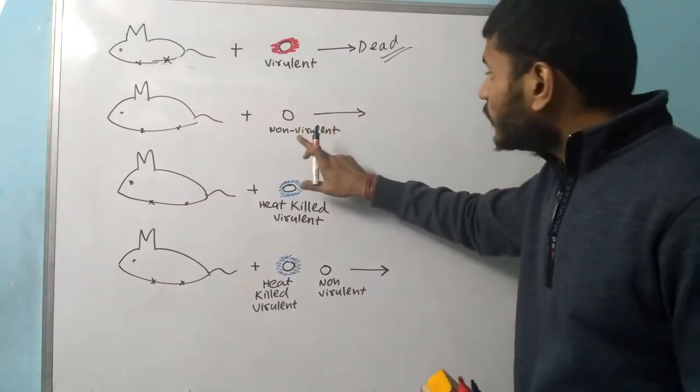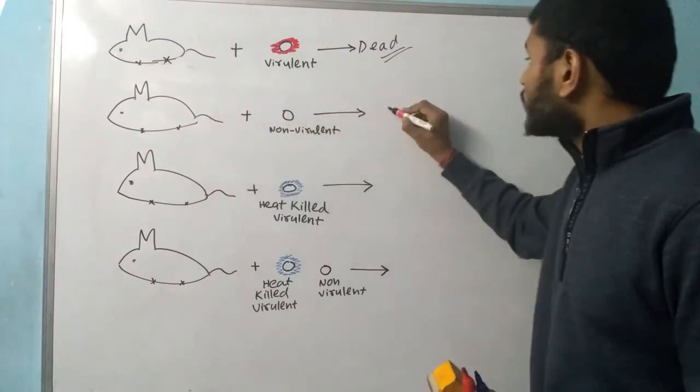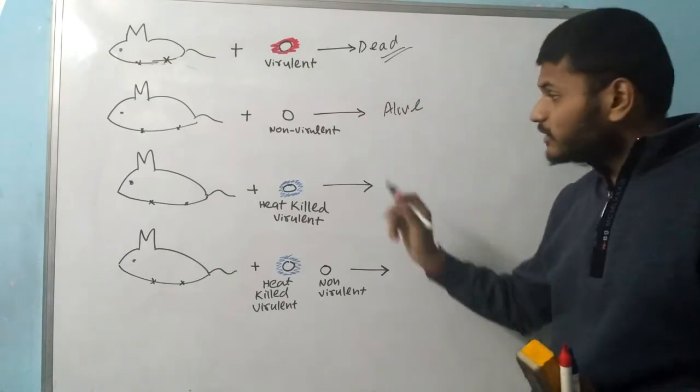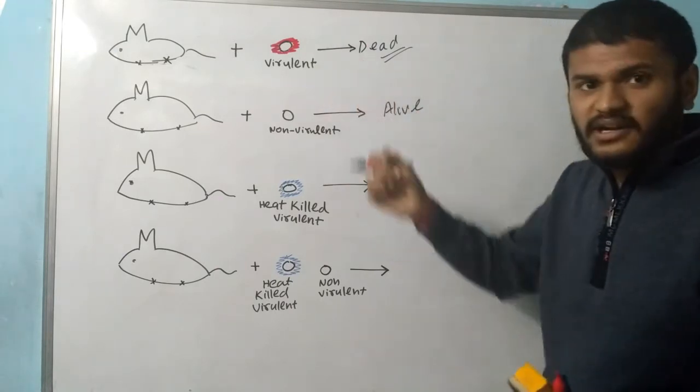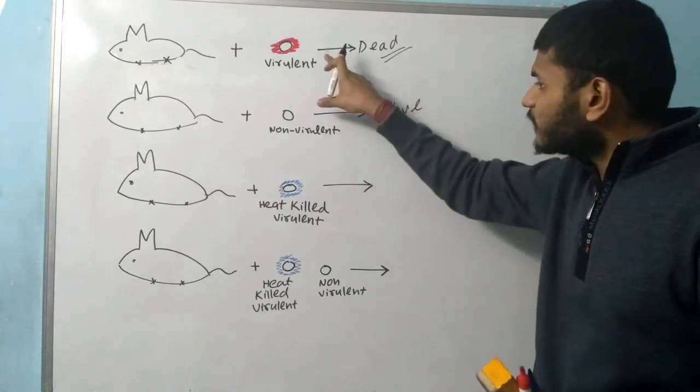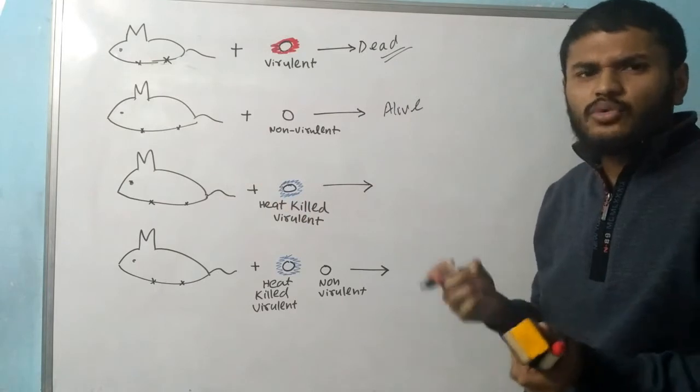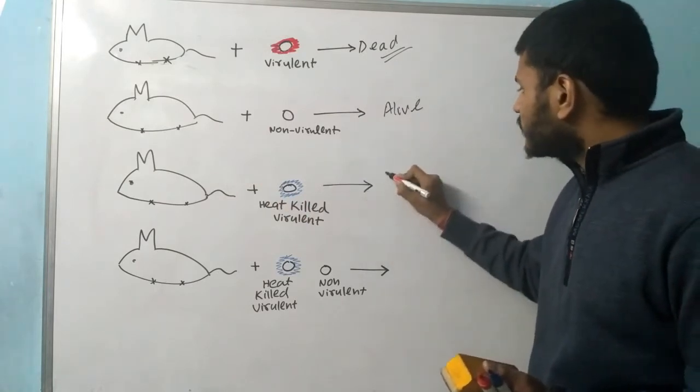In the second case when the non-virulent form goes into the mouse, the mouse is alive because it's non-virulent. In the third case when the virulent form got heated, the heat-killed virulent form doesn't cause any injury or any health issue to the mouse and the mouse is still alive.